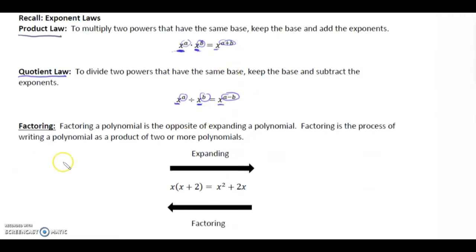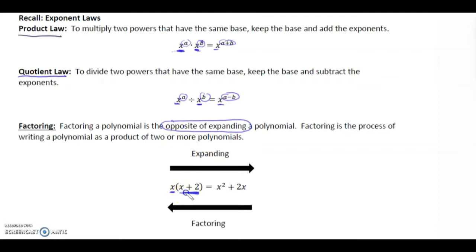Just to recap what factoring is: factoring a polynomial is the opposite of expanding. Factoring is the process of writing a polynomial as a product of two or more polynomials. For example, if we had x squared plus 2x, we would factor and pull out that x.